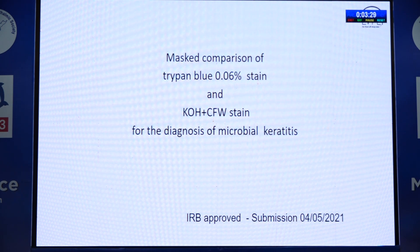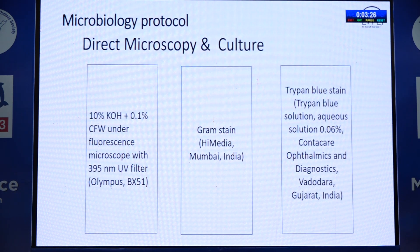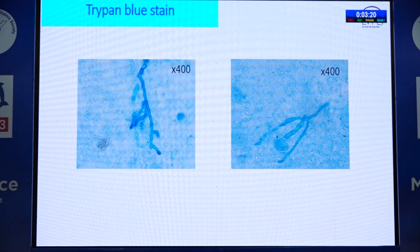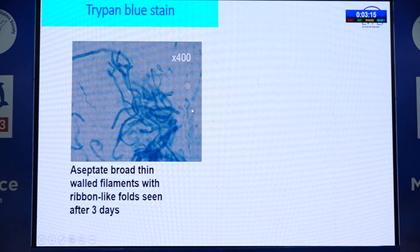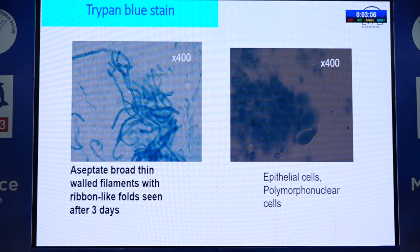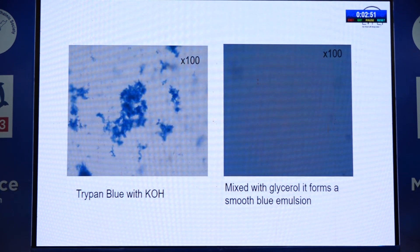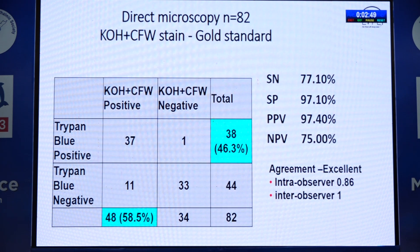In trypan blue staining you can see fungal filaments: aseptate broad, thin-walled filaments with ribbon-like folds — even in slides kept for three days. You can also see epithelial cells and polymorphonuclear cells. If you add trypan blue to KOH, crystallization occurs making it difficult to see. However, when mixed with glycerol it forms a smooth blue emulsion, against which fungal filaments are very easy to see.